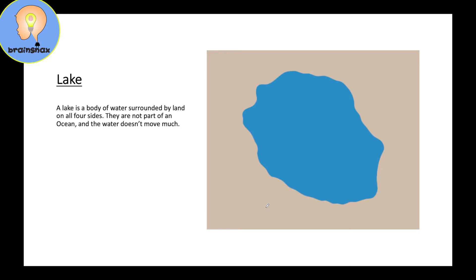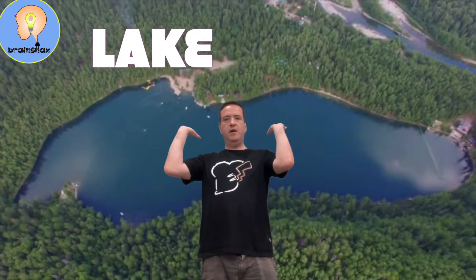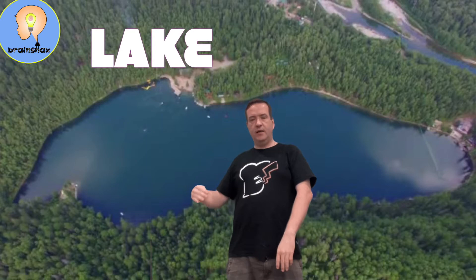Here we have a lake. A lake is a body of water surrounded by land on all four sides — one, two, three, and four — all have land around the outside of it. They are not part of an ocean, and the water in a lake does not move very much because there's nothing connecting to anything else. So here behind me I have a lake.